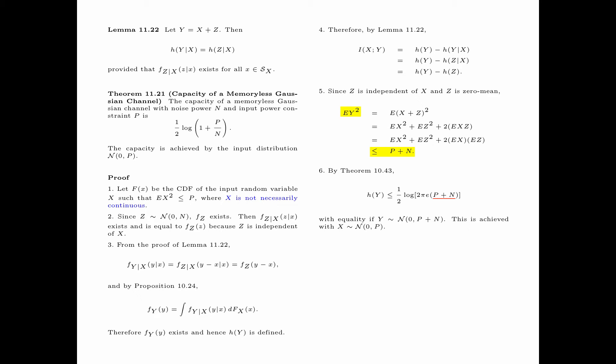With equality if y is the Gaussian random variable with mean 0 and variance p + n. This can be achieved with the input random variable x being Gaussian with mean 0 and variance p. To see this, let x be Gaussian with mean 0 and variance p, and z be Gaussian with mean 0 and variance n, independent of x. Then the variance of y equals p + n, the mean of y equals 0, and since y = x + z is the sum of two Gaussian random variables, y is also Gaussian with mean 0 and variance p + n.